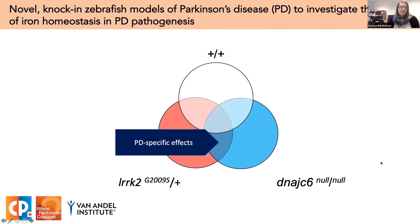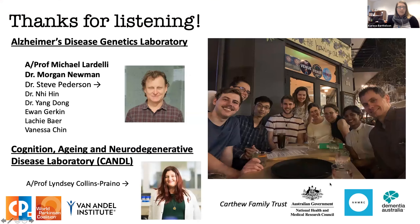We're also generating a loss-of-function mutation in the gene DNAJC6. Mutations in this gene are associated with juvenile-onset Parkinson's, and not a lot is known about the function of this gene. This project is in its very early stages and will help us understand the pre-symptomatic changes in Parkinson's, beginning our journey toward novel preventative therapeutics. Thank you so much for listening. I want to thank my PhD supervisors Michael Lardelli and Morgan Newman, bioinformatics mentor Dr. Steve Peterson, collaborator Lindsay on the Parkinson's project, and our funding bodies — the Carthy Family Trust, the NHMRC, and Dementia Australia.